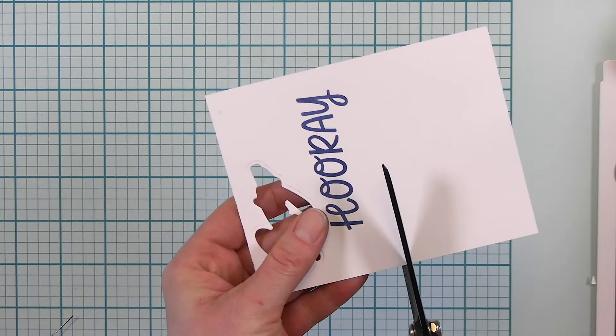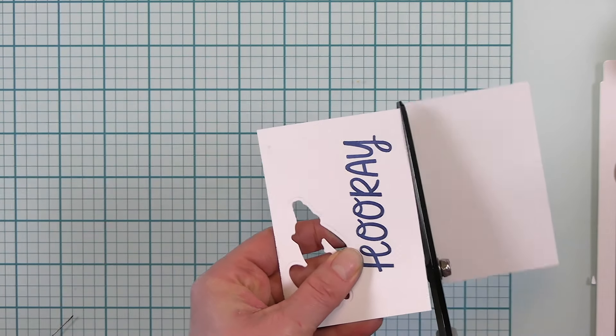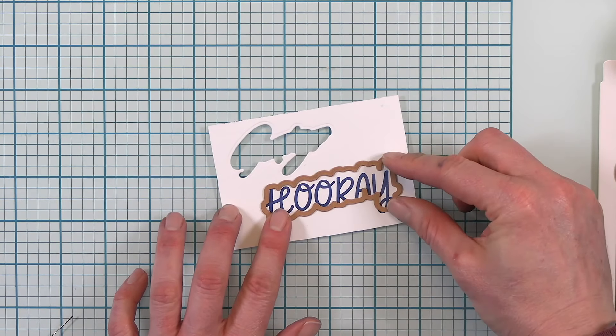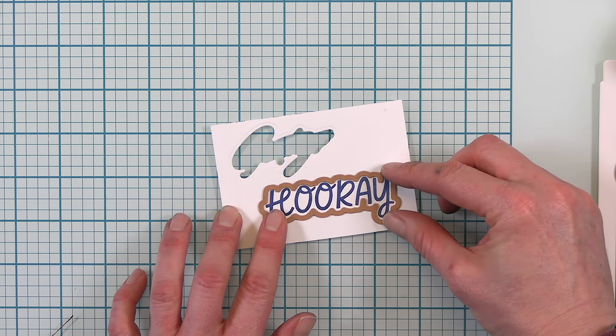I'm using a scrap piece of Better Press paper here and then running that through my Platinum 6. Next I will use the coordinating die and my Platinum Scout machine to cut out that sentiment.